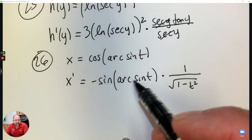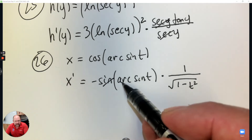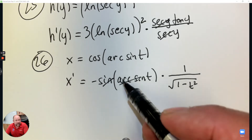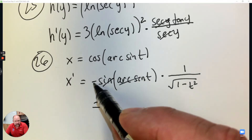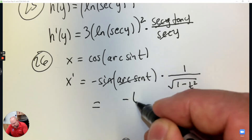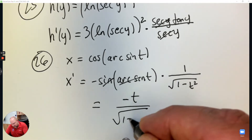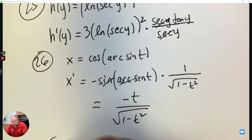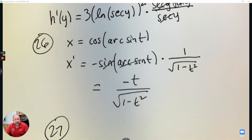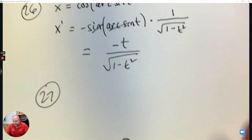It might be interesting to note that sine and arc sine are inverses — they undo each other. So you're left with negative T over the square root of 1 minus T squared. For multiple choice, to have that ability to see it would be big.